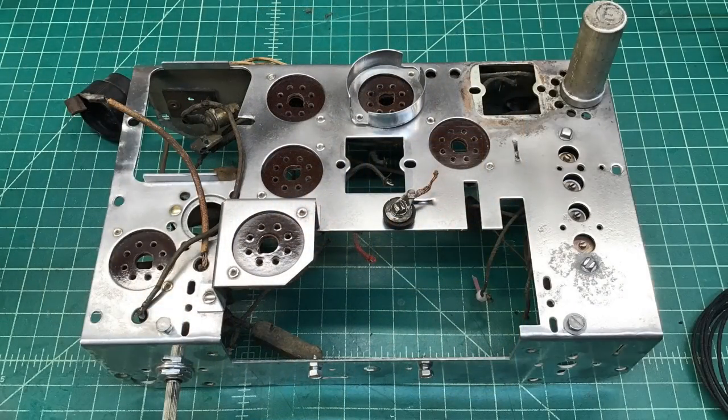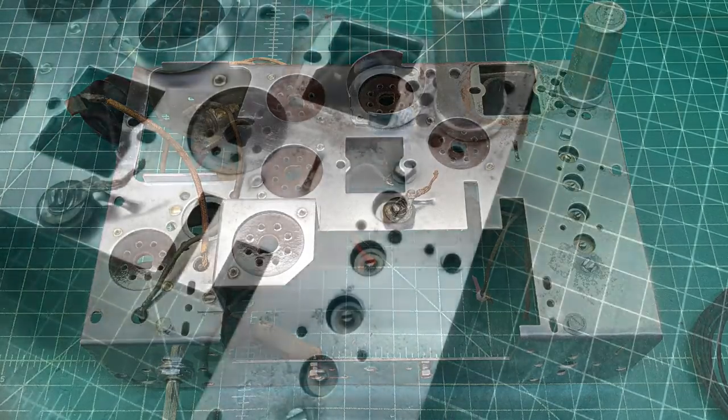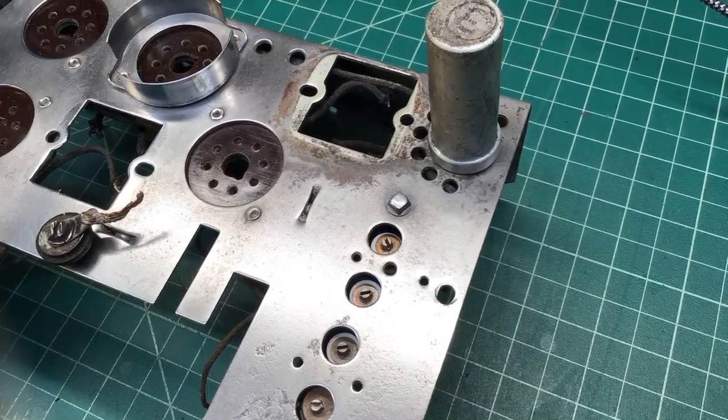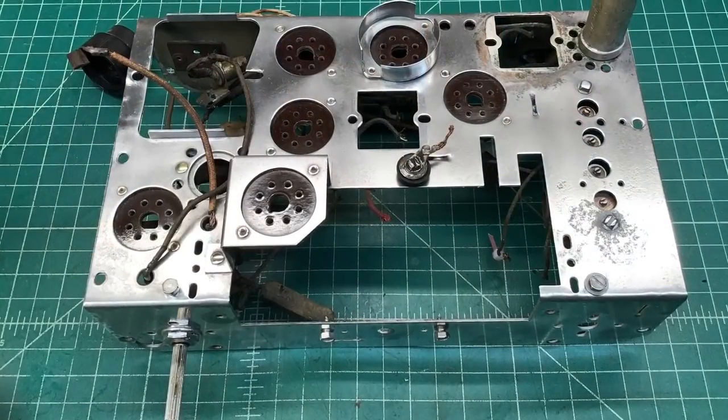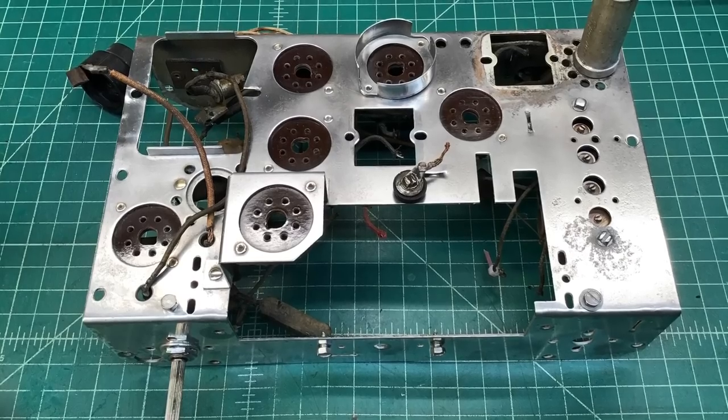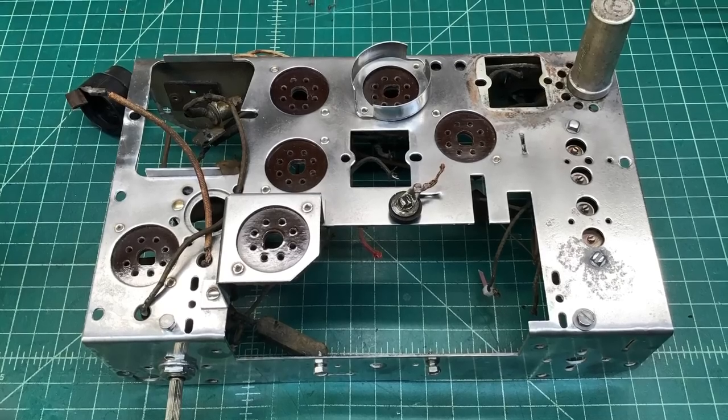And one last look here at the chassis so you can see I'm really really close now on getting most of the rust off just around this back transformer in that one electrolytic can. And I will be ready for a rust inhibitor and then start on the electrical restoration next. Thanks for watching folks. Take care.